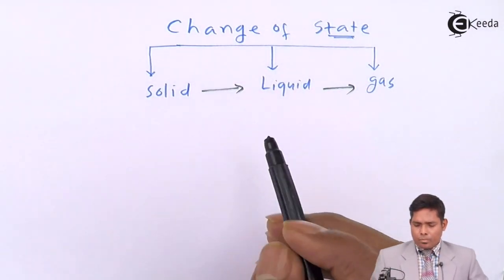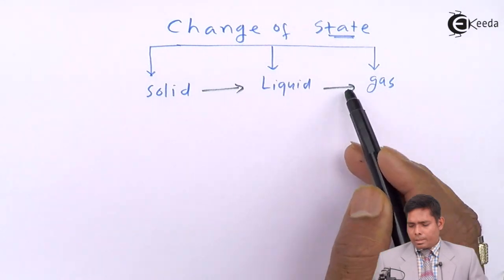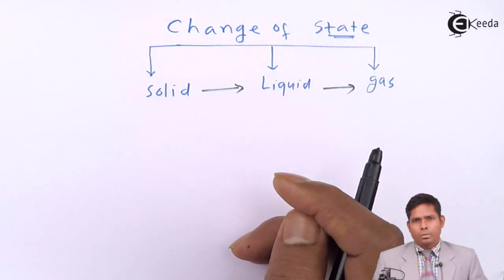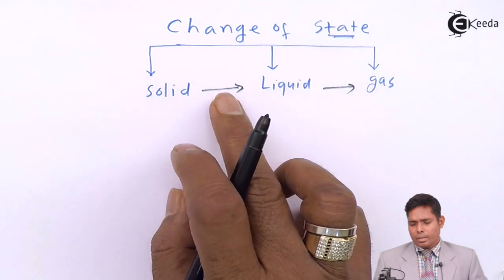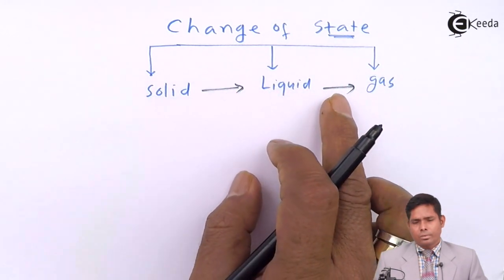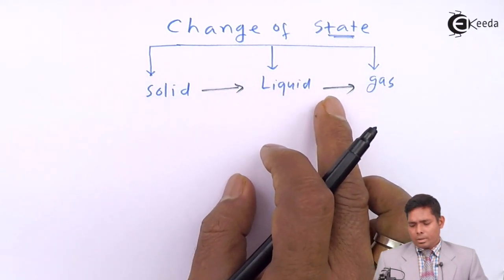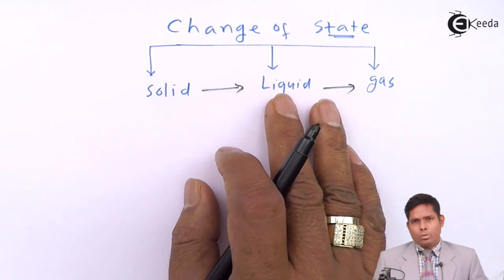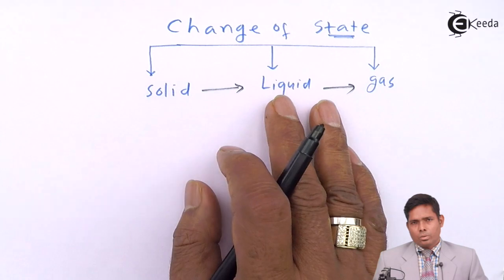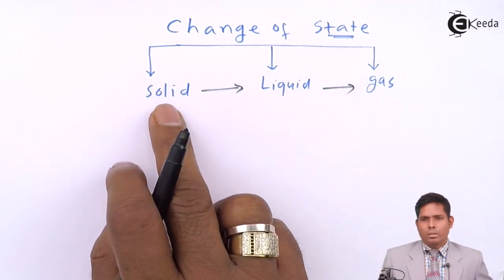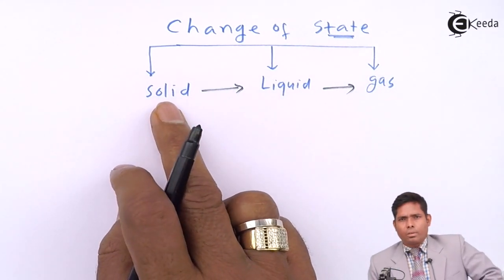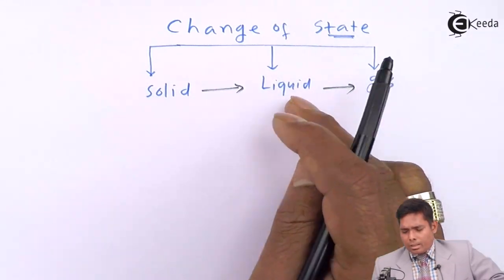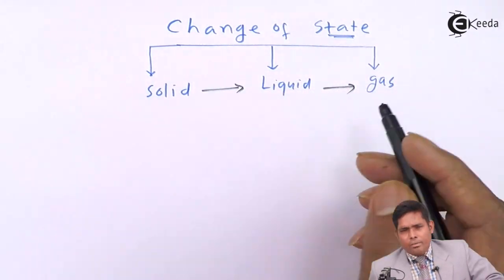The heat involved in these processes is called latent heat of fusion and latent heat of vaporization. The heat we supply is used in changing the state of the substance — converting it from solid to liquid, or liquid to gaseous form.